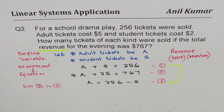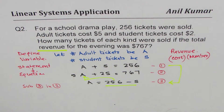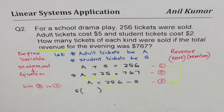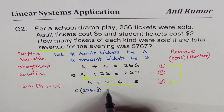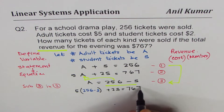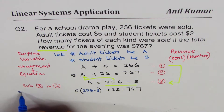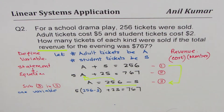We substitute the value of A into equation 2. So what we get is 5 times (256 minus S) plus 2S equals 767. This gives you an equation only in terms of S — one variable. The idea is to get down to one variable.